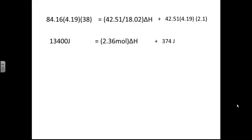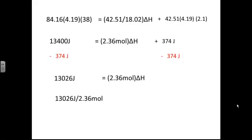At this point, this is just a simple algebra equation. We're trying to get delta H by itself. First, subtract 374 joules from both sides. Our net result gives us 13,026 joules on the left, which equals 2.36 moles times delta H on the right. Next, divide both sides by 2.36 moles. When we do that, we're left with just delta H on the right.